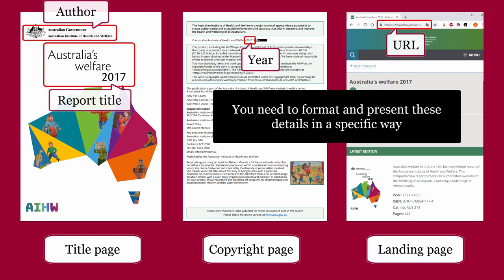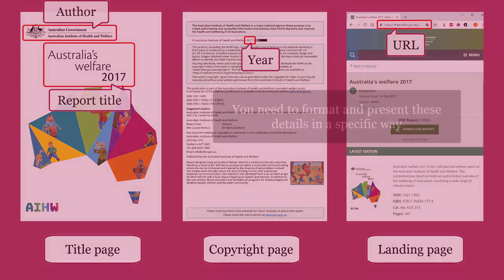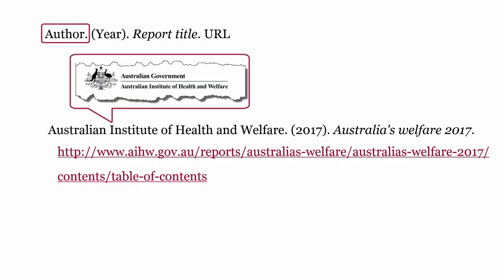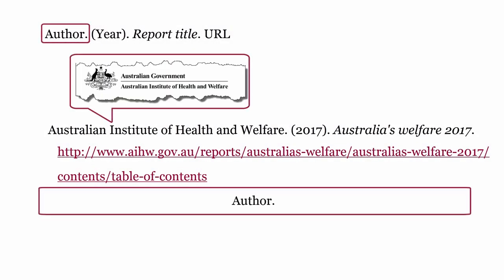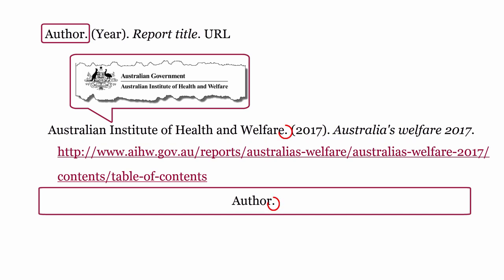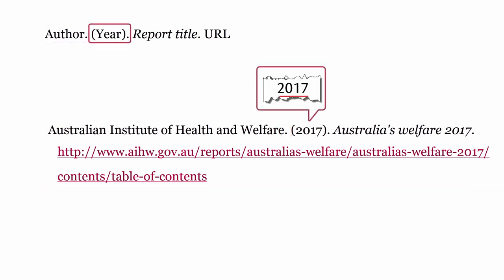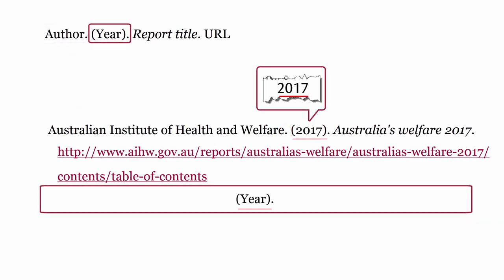You need to format and present these details in a specific way. Author: this is the government agency that authored the report. Begin the entry with the name of the government agency, then a full stop. Year: this is the year the report was published, formatted with the year placed within parentheses, followed by a full stop.